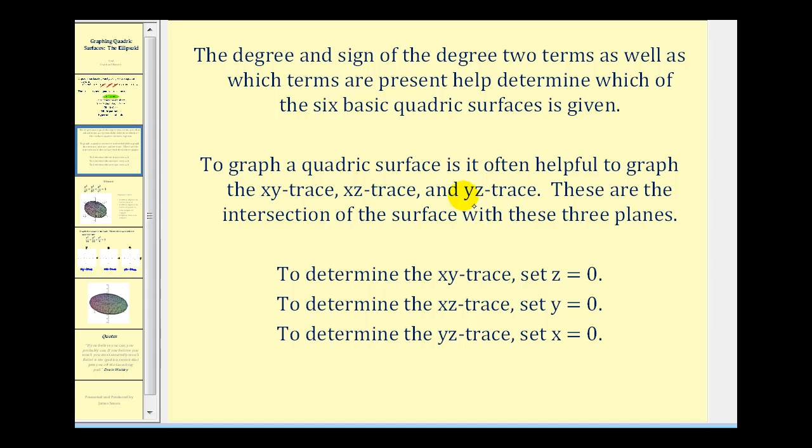Now to graph a quadric surface, it's often helpful to graph the xy, xz, and yz traces, which is where the surface will intersect each of these three planes. Sometimes there may not be a trace in the given plane, but if we make a trace that's parallel to the given plane, there usually will be.